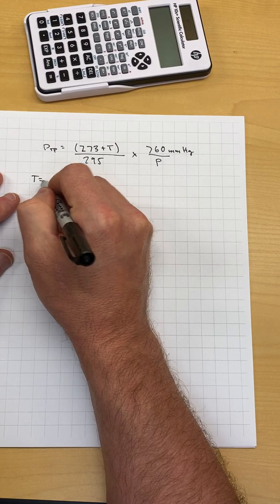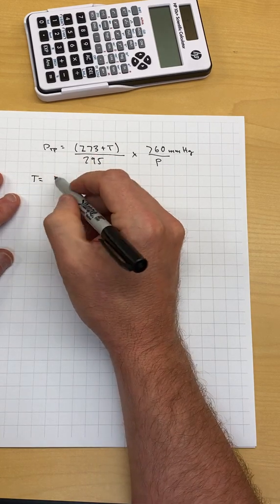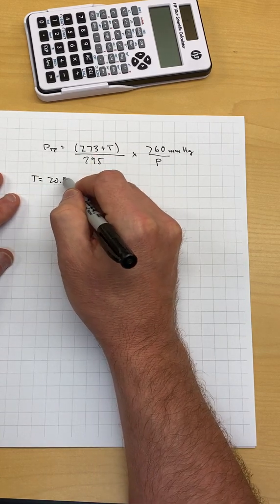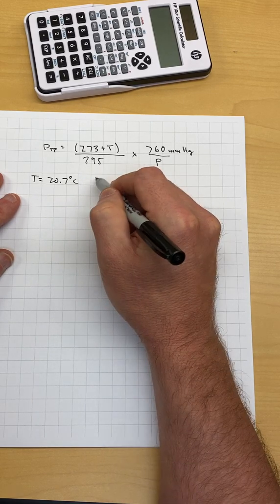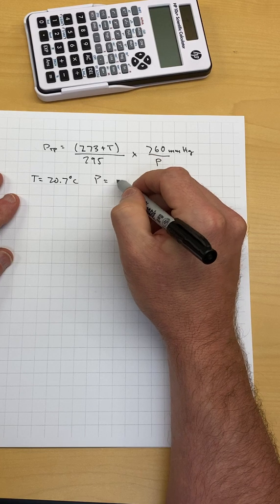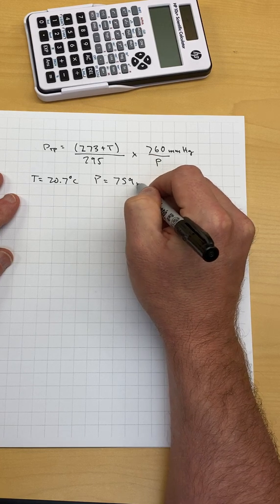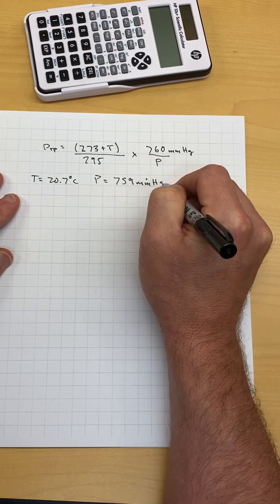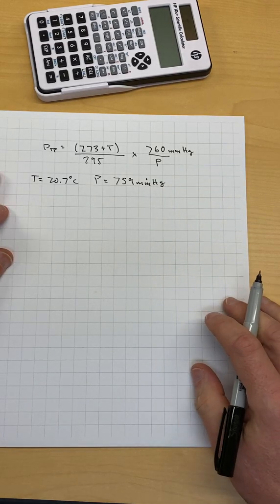In my example, I'm going to say the temperature is equal to 20.7 degrees Celsius, which is the temperature in my office right now, and the pressure is 759 millimeters of mercury here today in Ann Arbor.